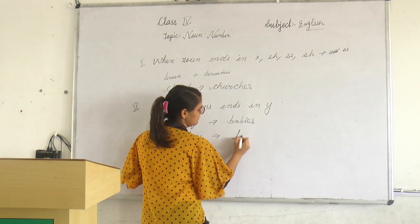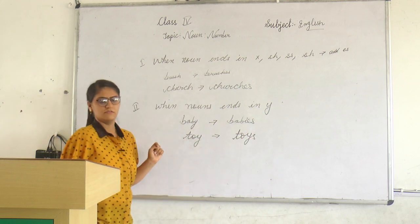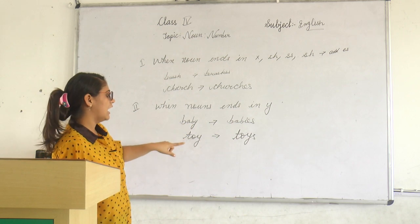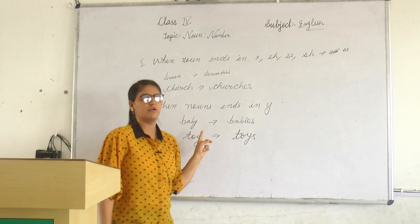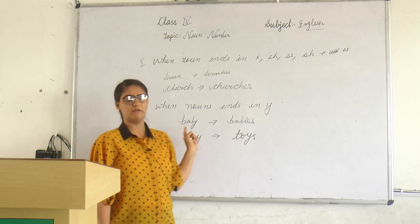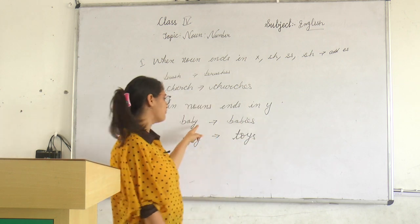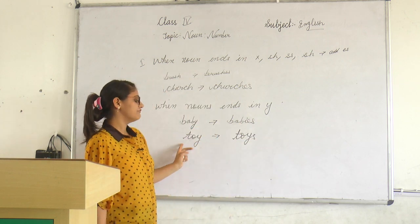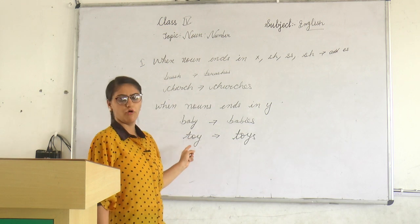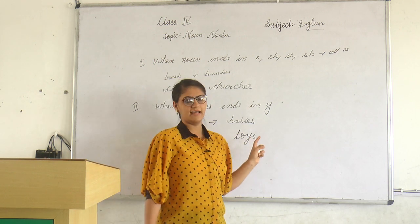So, if the noun ends in Y and before that Y there is a consonant, we make it plural by adding IES in place of Y. If the noun ends in Y and before that Y there is a vowel, then we just add S to make it plural.